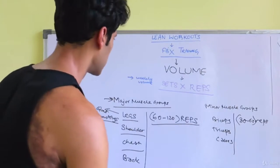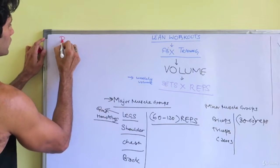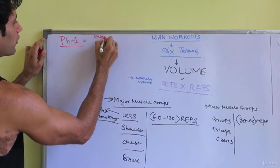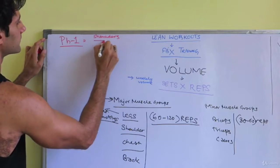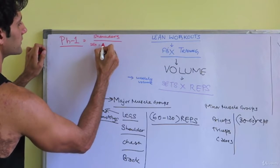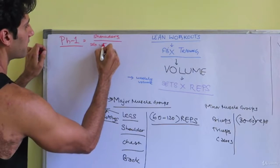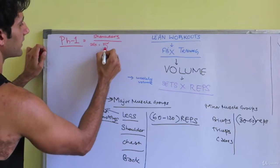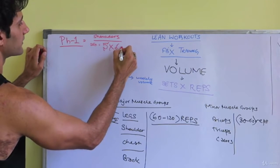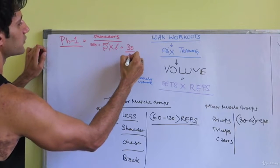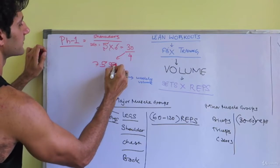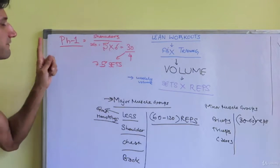30 to 60 repetitions. Now let's see where the FPX training stands. In phase one, when we talk about shoulders, I've given you two exercises: one is three sets, one is two sets. In total, they are five sets, and this workout comes six times in a week.